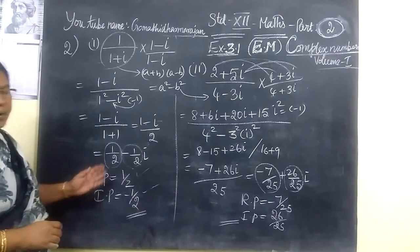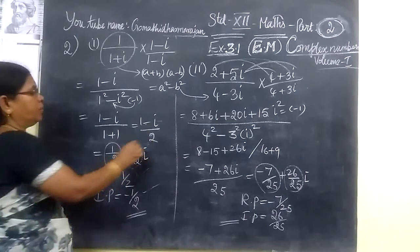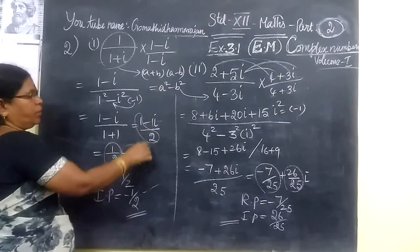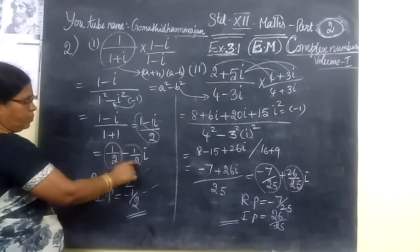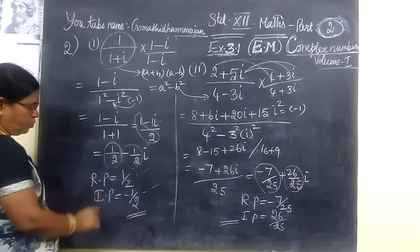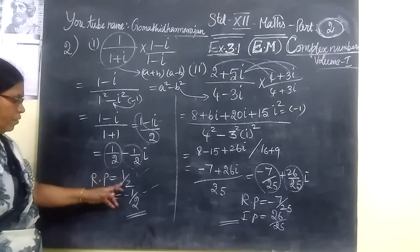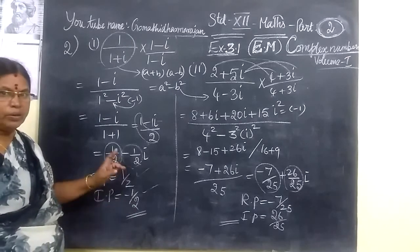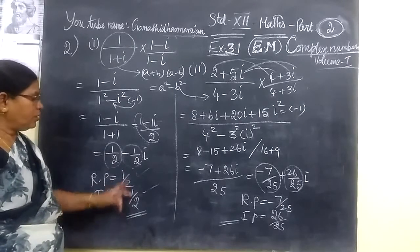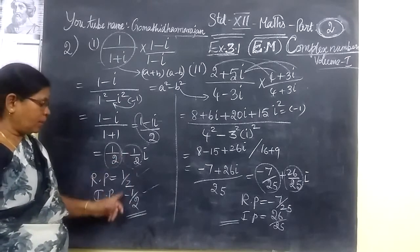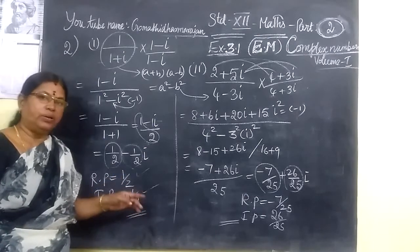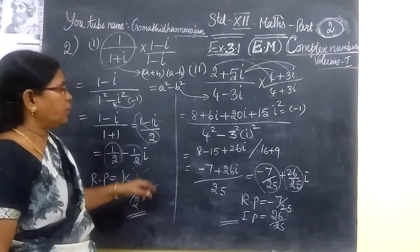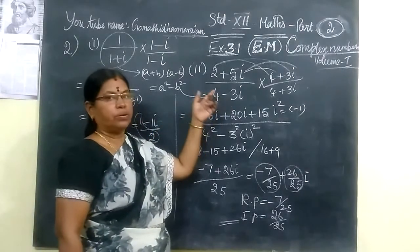You split it into the real part and the imaginary part. So the real part is one-half and the imaginary part is minus one-half. Whenever you write the answer in the final form, if the sign is plus there is no need to write it; if the sign is minus, you write it. And see the next one.